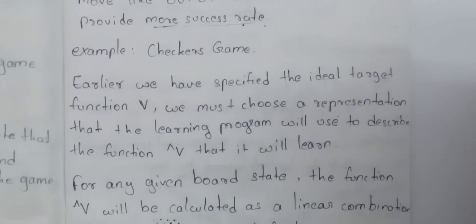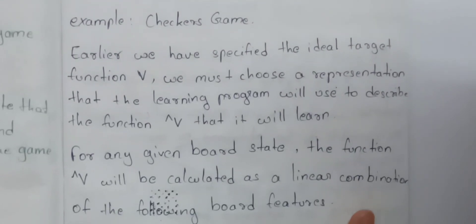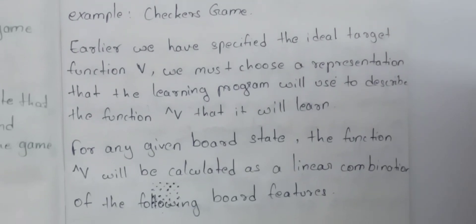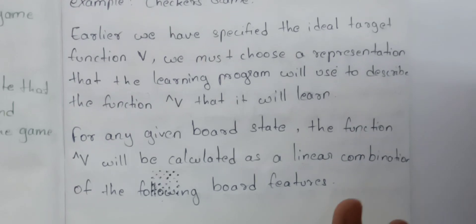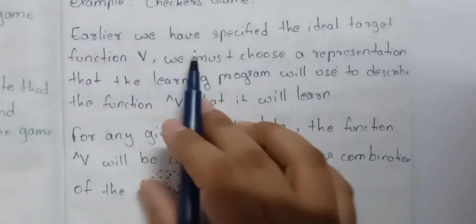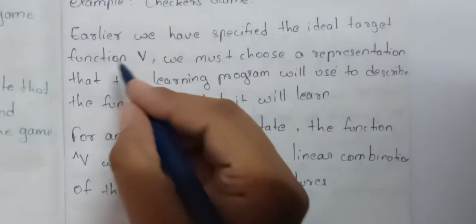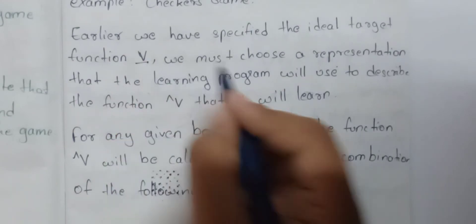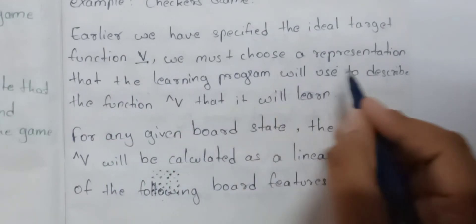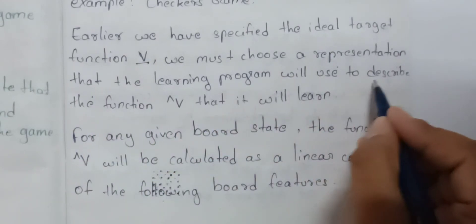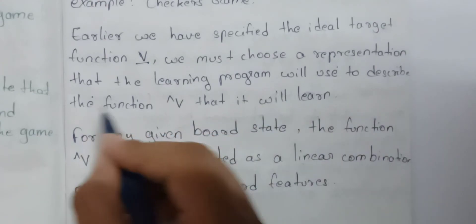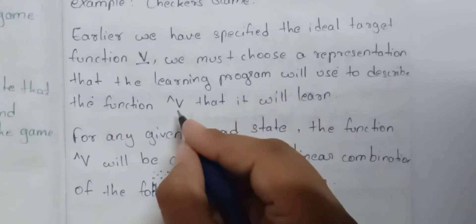Now, an example: the checkers game. We have specified that the ideal target function V — we must choose a representation that the learning program will use to describe the function V'.